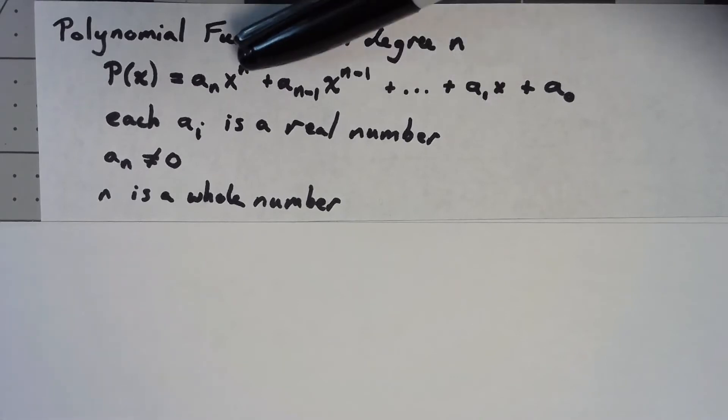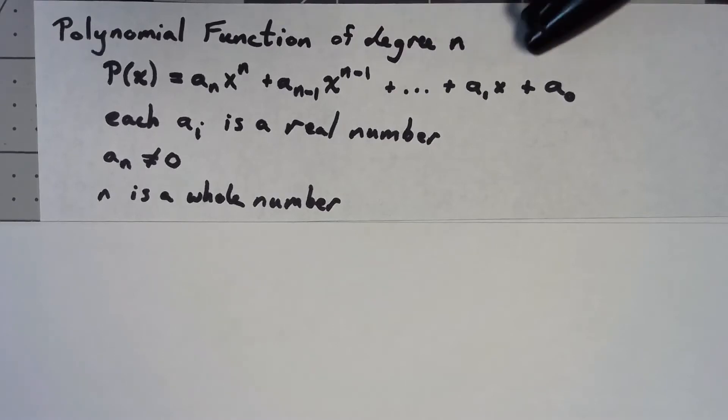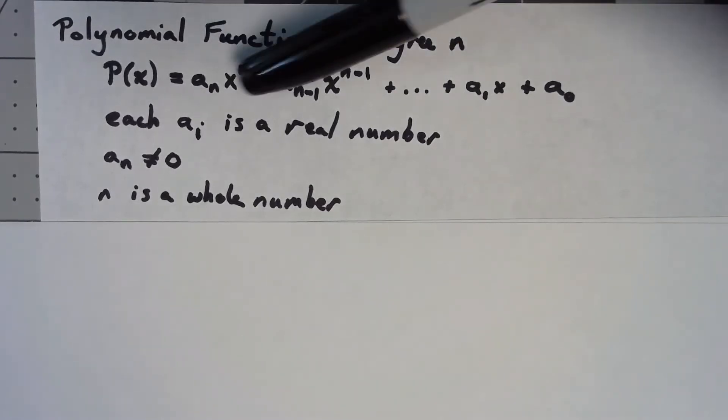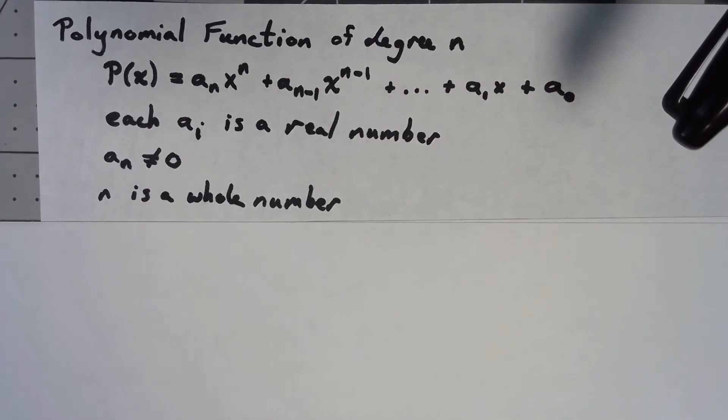And finally the exponents have to be whole numbers. Given the way we've structured this thing, saying that the first one is a whole number means that all the rest of them have to be whole numbers.